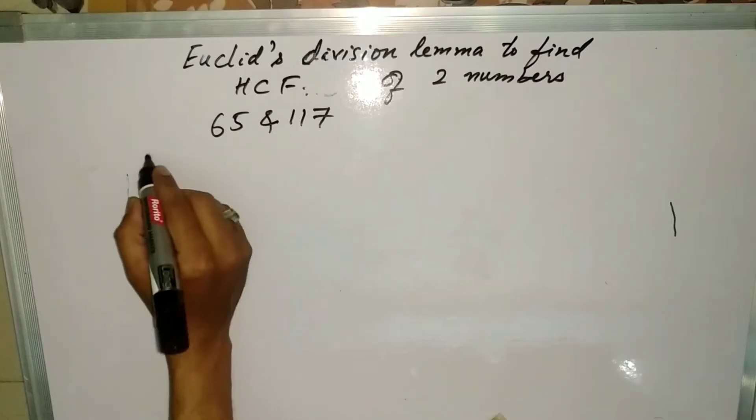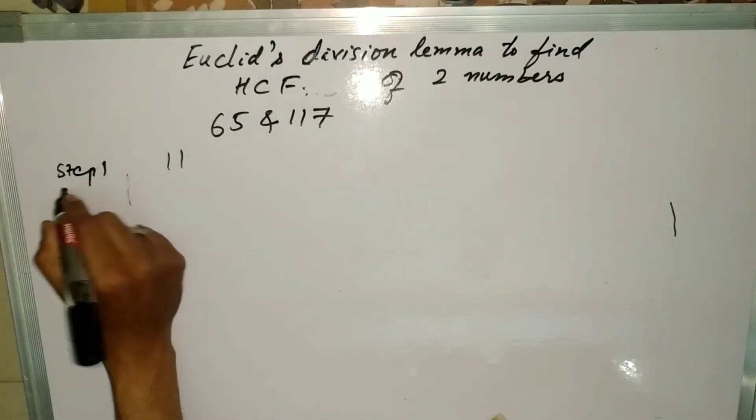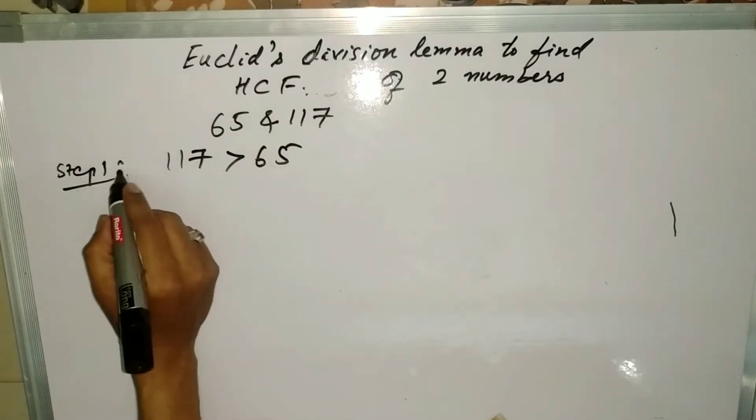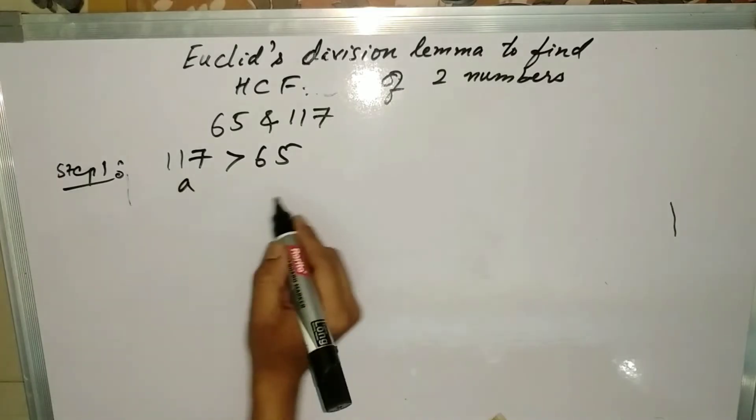Step one is to compare the numbers. As we compare the numbers, we find 117 is greater than 65. When you get the comparison, select the greater number as a and smaller number as b.